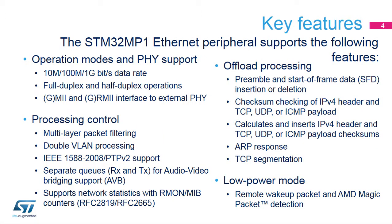The key features of the STM32MP1's Ethernet MAC Peripheral are presented in this slide. The peripheral supports both full and half-duplex modes of operation at either 10 or 100 megabits per second. Auto-negotiation between the peripheral and the external PHY enables automatic configuration of the operation mode. The external PHY is supported through two interface types: the typical Media Independent Interface, or MII, and the reduced MII interface that needs half the pins of the MII.